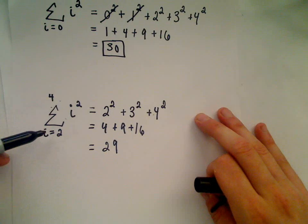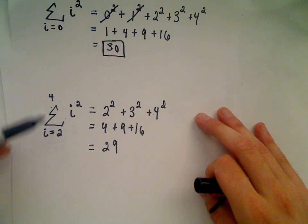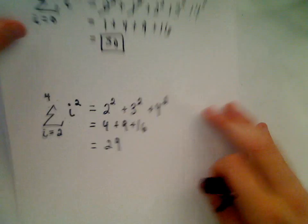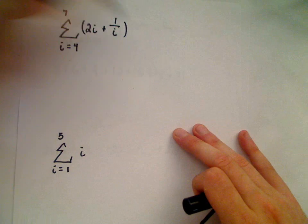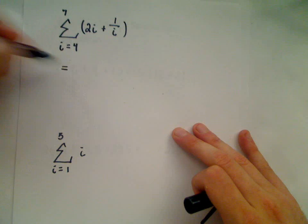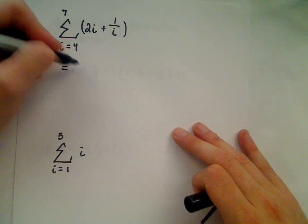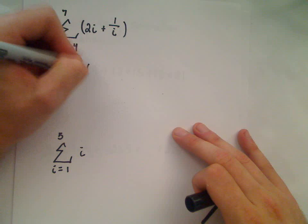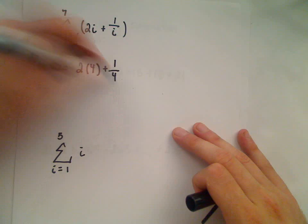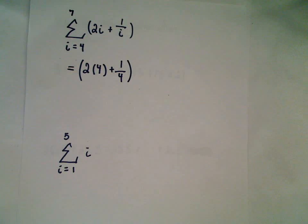So a lot of times we'll start it at 1, but it definitely doesn't have to. It can start anywhere and it can stop anywhere. Let's do a couple more. I'm not going to calculate all the way out. So it says if you start at i equals 4 and we go up to 7, everywhere there's an i, I'm going to plug in the quantity 4. So that's my i equals 4 term when I plug it in.